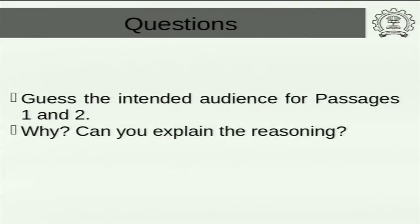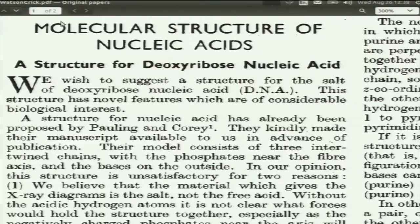It is very clear what the intended audience is and you can also explain why. You should always do this as a game: can I look at some passage and guess the audience? How many times do I get it right? Sometimes you don't get it right because the author hasn't done a good job — and that is also possible. Before I do this, I actually want to show you something. This is a very famous paper written by Watson and Crick when they figured out the double helix structure of DNA.